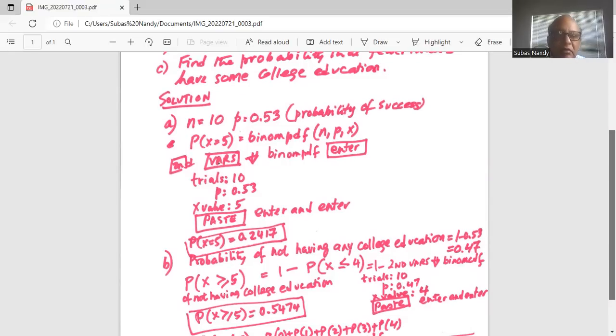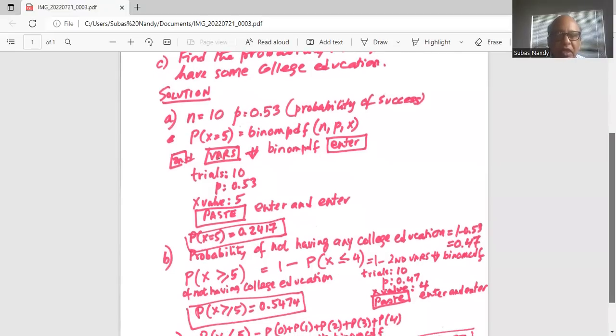So in our calculator, we will type one, then minus, then press the second key, then vars and scroll down to binom CDF. Trials is 10, small p is 0.47.